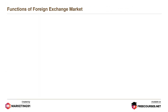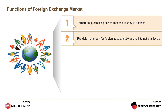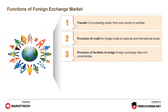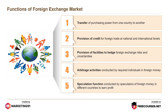Functions of the foreign exchange market include: transfer of purchasing power from one country to another; provision of credit for foreign trade at national and international levels; provision of facilities to hedge foreign exchange risks and uncertainties; arbitrage activities conducted by required individuals in foreign money; and speculation function conducted by speculators in different countries to earn profit.